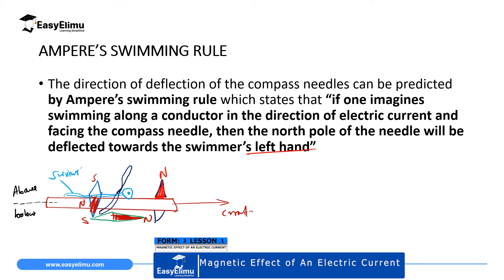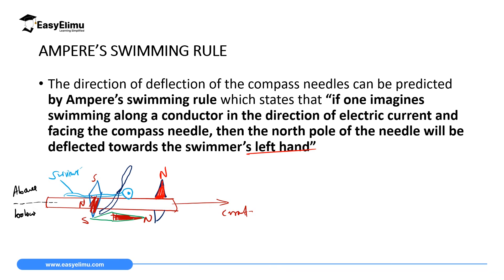So in this case, if you have a compass needle on top of the swimmer, the north pole is going to face down, and then the south pole is facing up. When you have it below, the north pole is facing up where the left hand side of the swimmer is, and then the south pole is facing the right hand side. When you have it above, the north pole is facing to the right hand side, and the south pole is facing the left hand side.